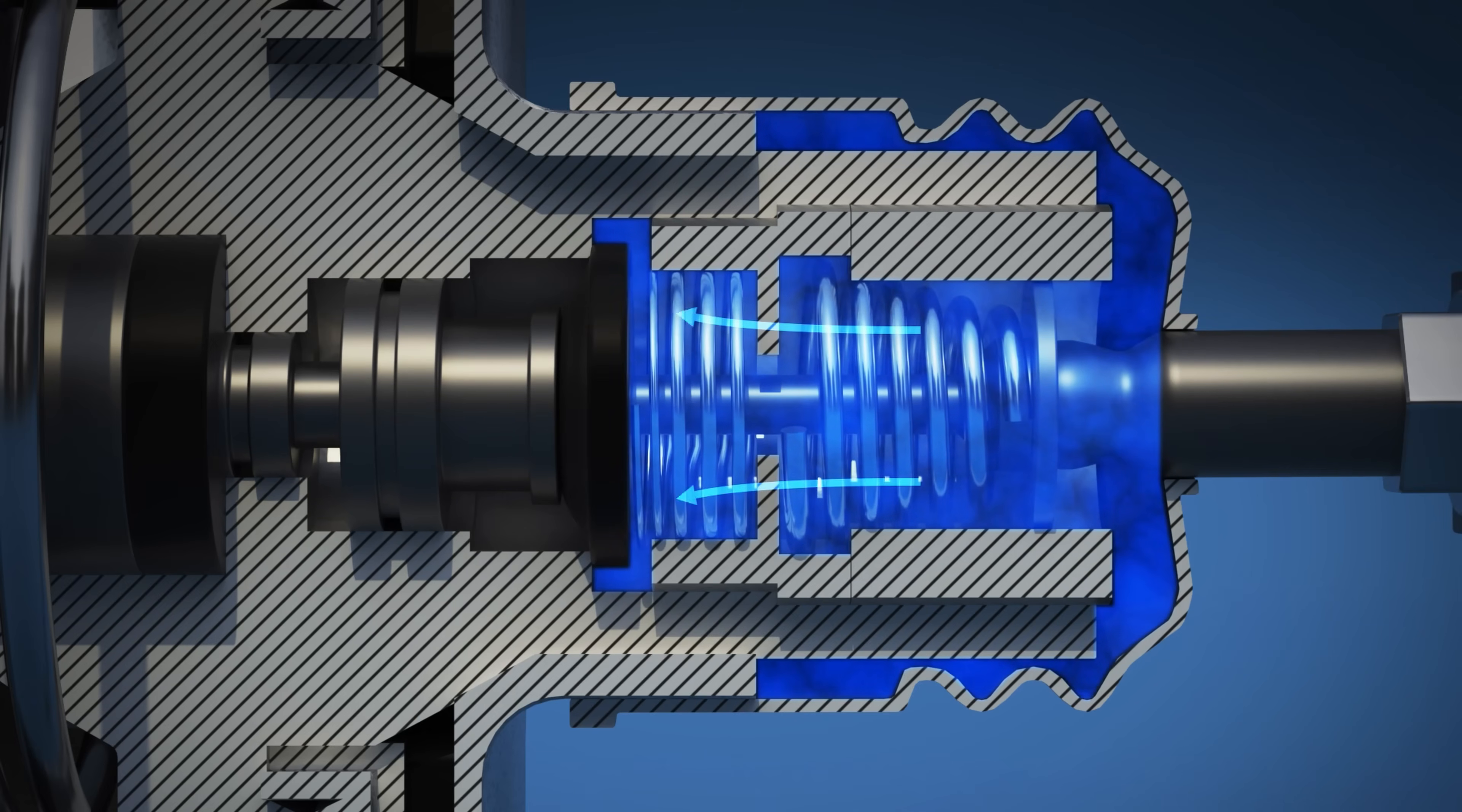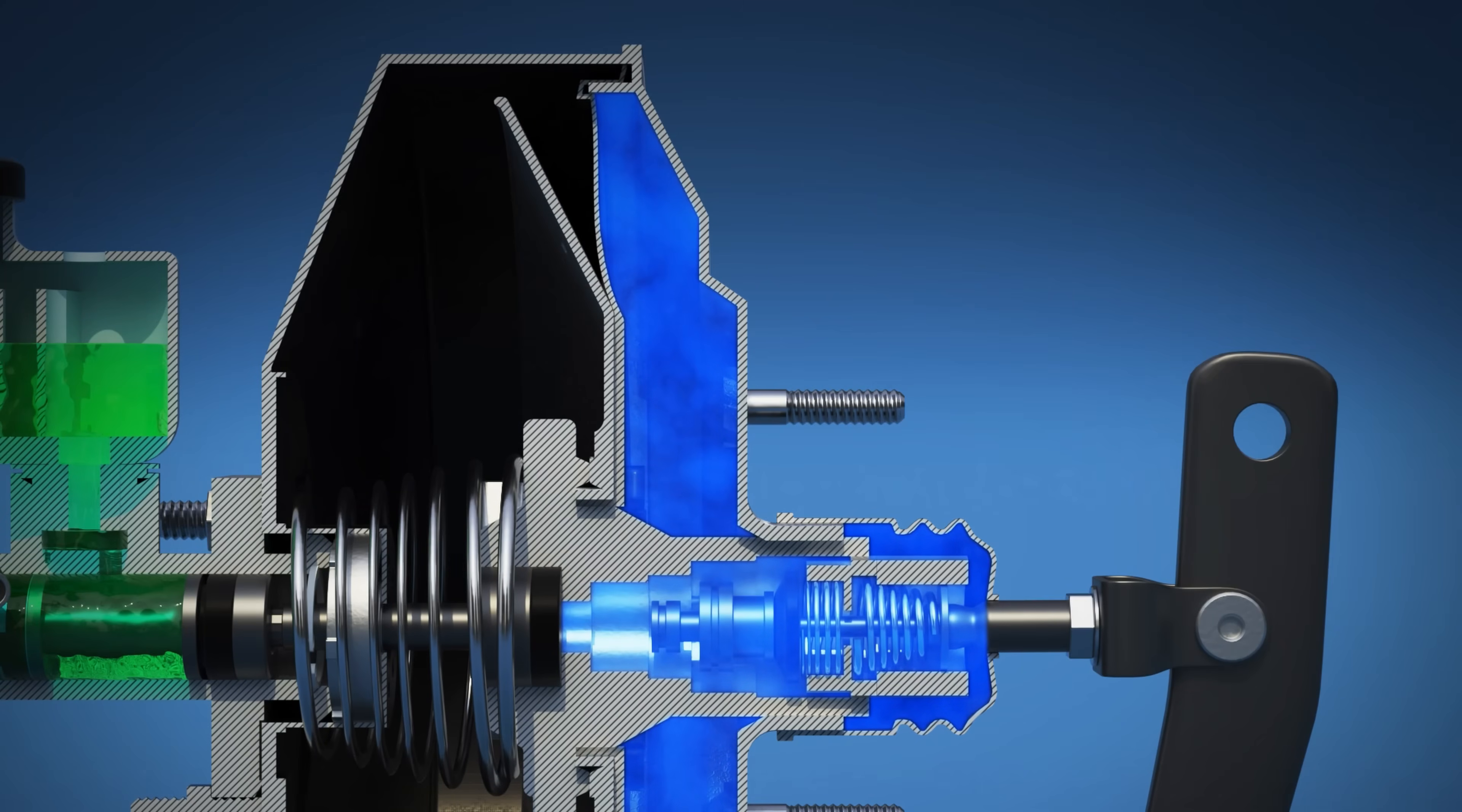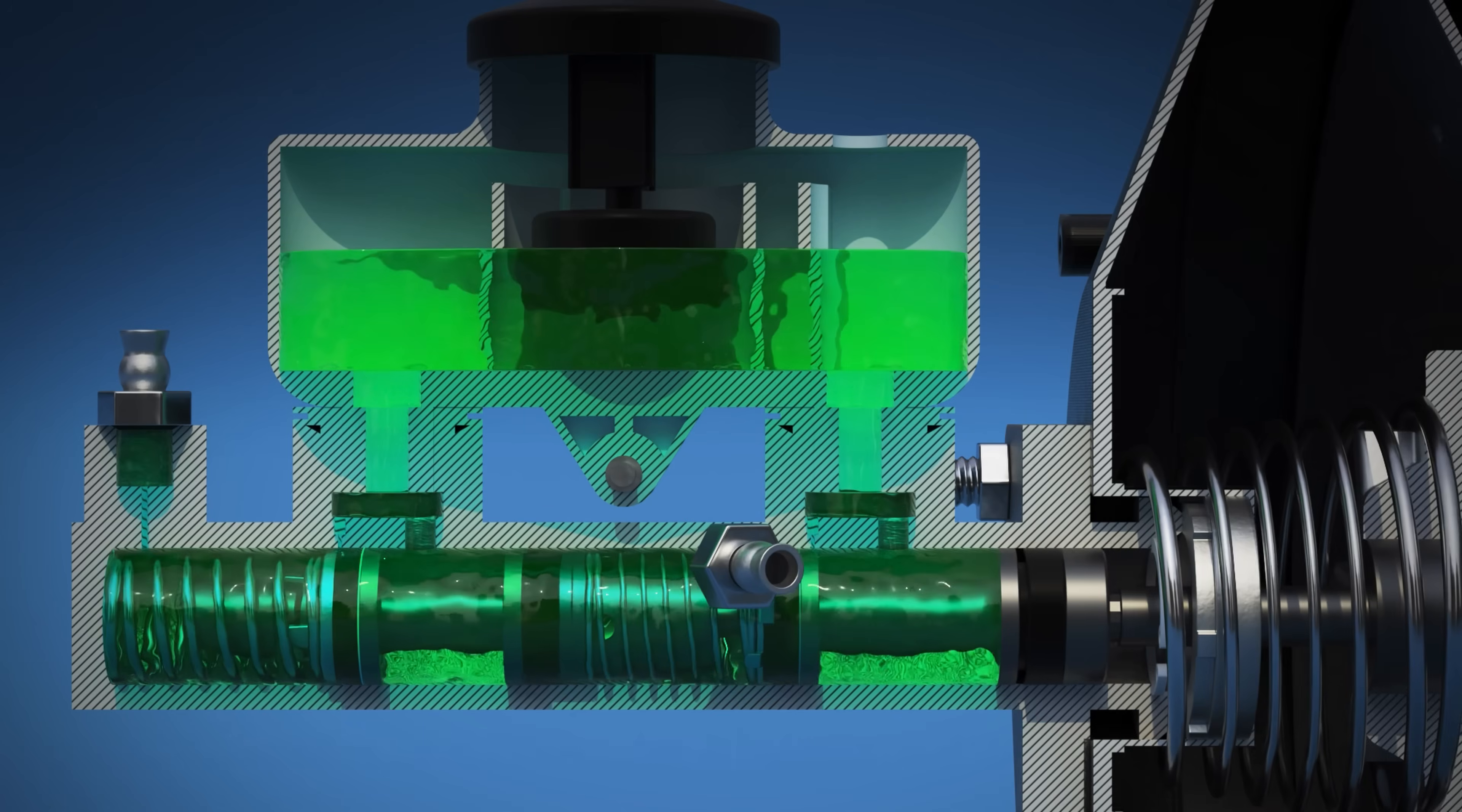When the brakes are applied, the pushrod opens the air valve within the brake booster to allow air to enter the rear-facing side of the diaphragm within the booster, increasing pressure on that side. This forces the pushrod even further into the piston within the master cylinder.